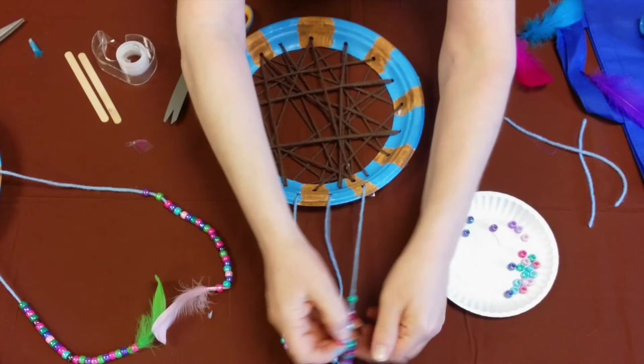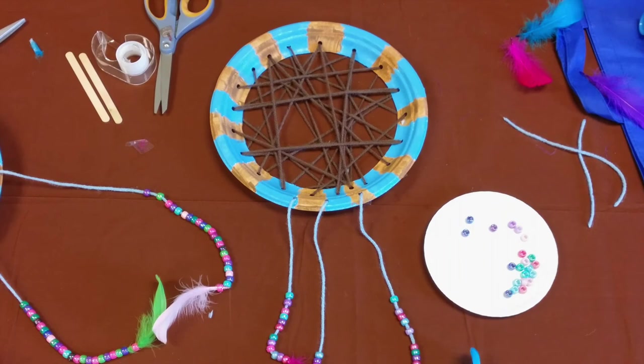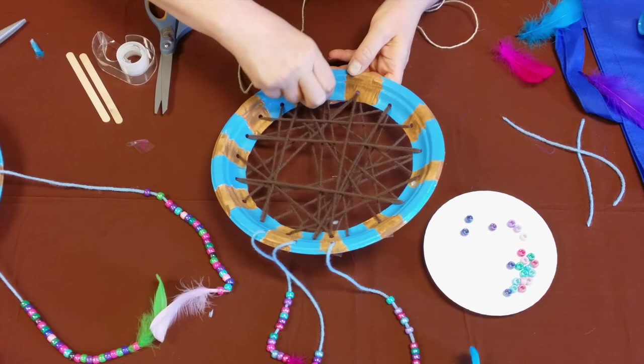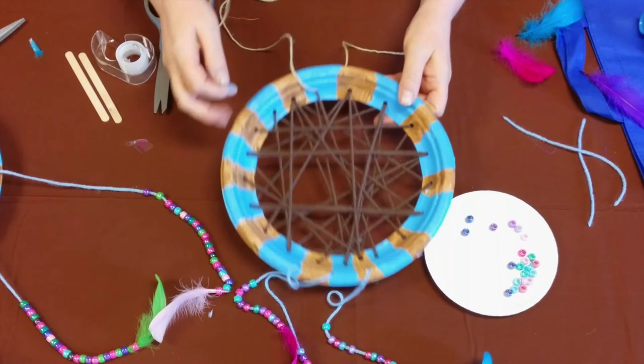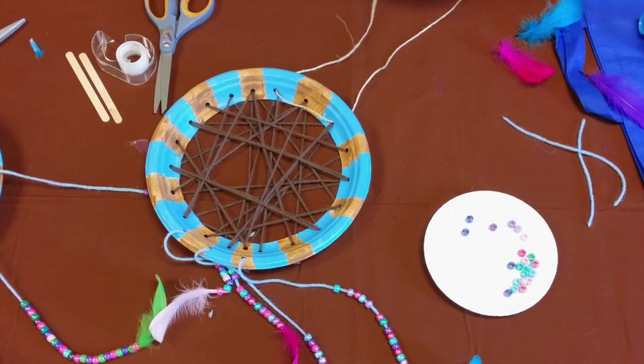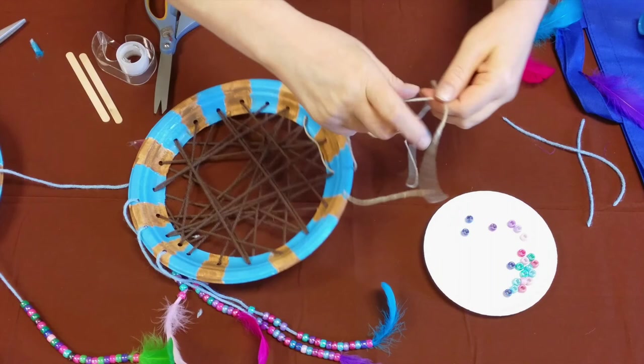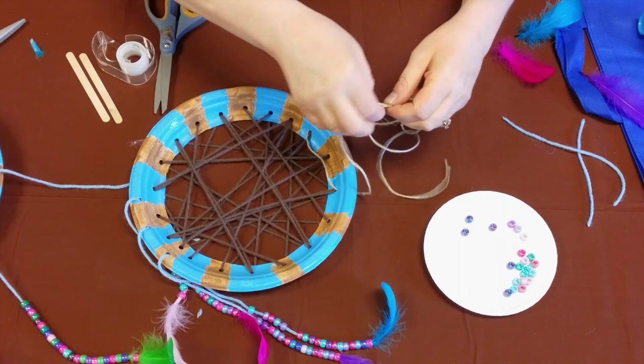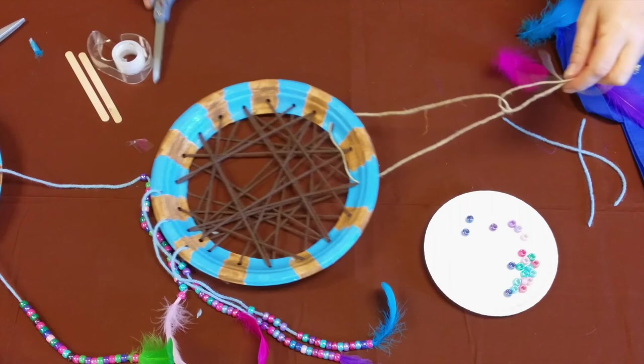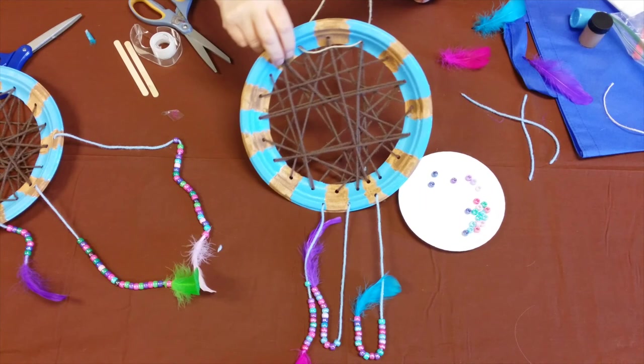Now we have the inside of the dream catcher done, we've got the three little decorative tails, and now the only thing that we've got left to do is to put something to hang it on with. I'm going to take one end of this and put it through, and you want to make sure you kind of get it towards the top and get it centered. You may have to cut some of the twine back after you get it tied, but I wanted to make sure you had enough to tie.